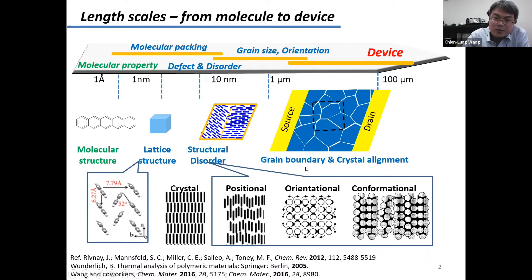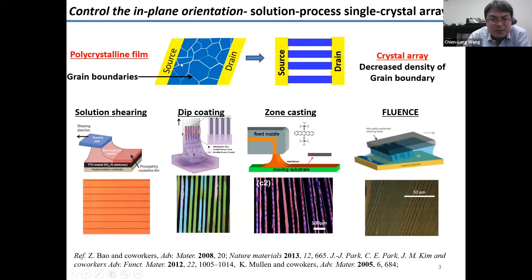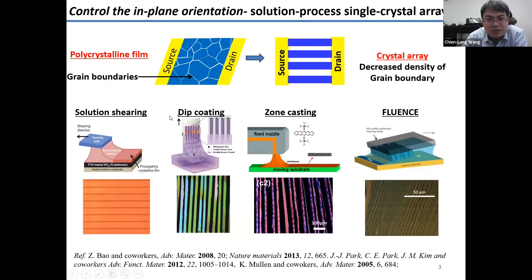In order to reach high mobility, scientists have been thinking of different ways to remove grain boundaries so that when charges are transported, they won't be hindered by structural defects. One very effective way to make high-performance OFETs is by changing the polycrystalline thin film into crystal arrays. Techniques like solution shearing, dip coating, zone casting, and others have been developed to produce crystal arrays of conjugate molecules, enabling high charge mobility.